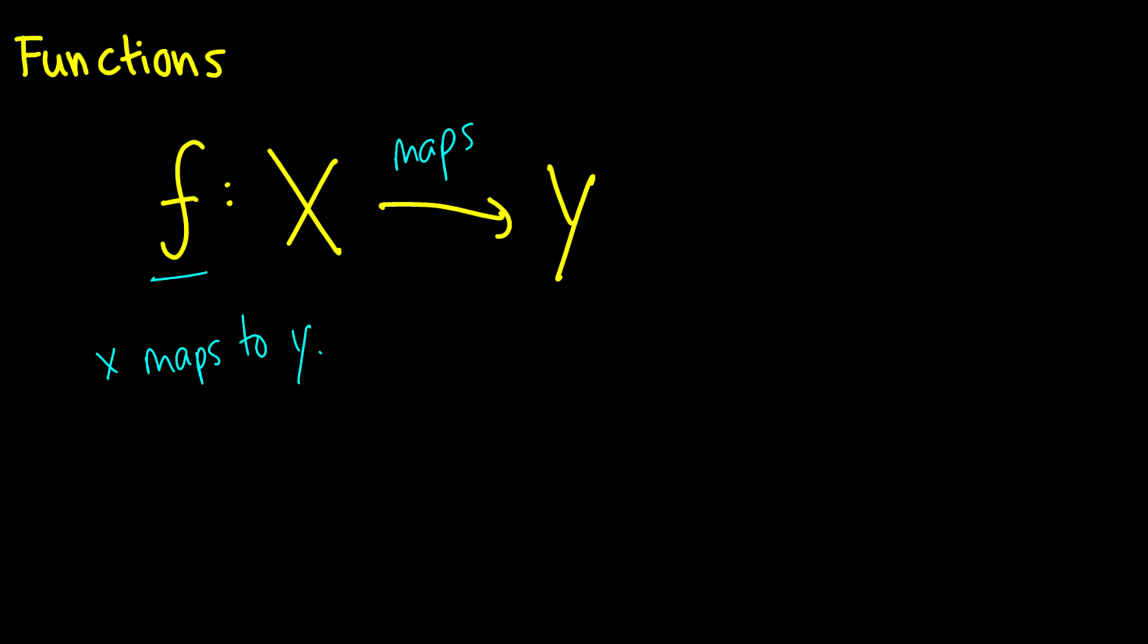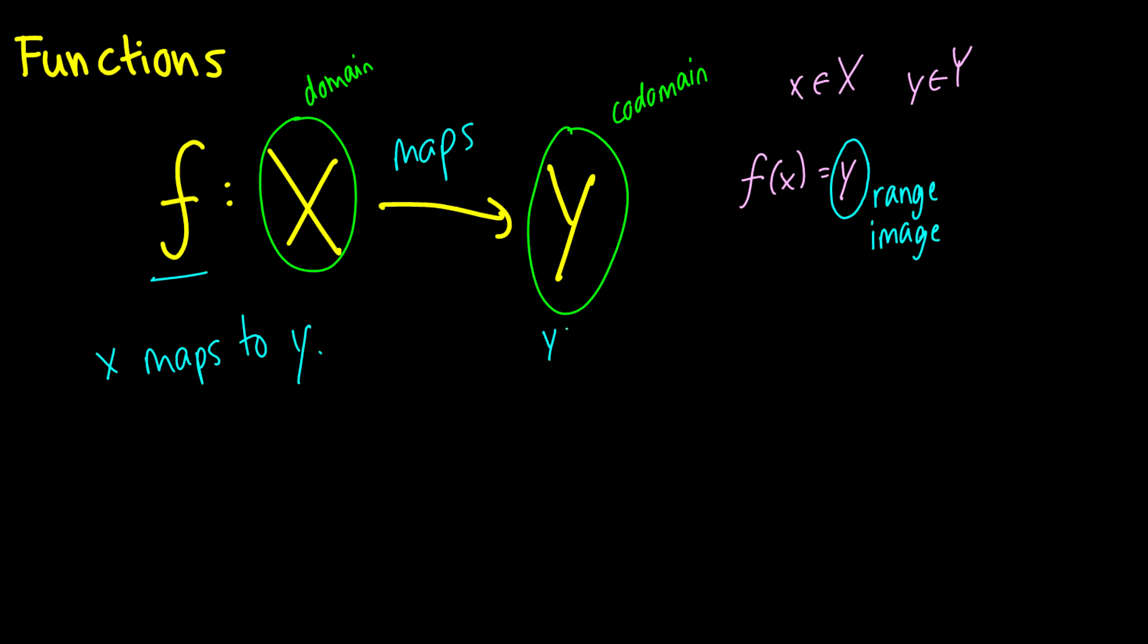There's a bunch of terminology we have to do here. Everything in the set X is going to be the domain. All the elements in the set Y are going to be the codomain. For each of the elements in the big set X and each of the elements in the big set Y, we write that f of x is equal to y. And all of the numbers that can be output through the function is called the range or the image of f. So the set of y such that f of x is equal to y. This is the range or the image.